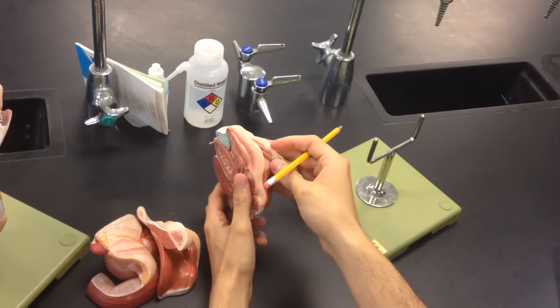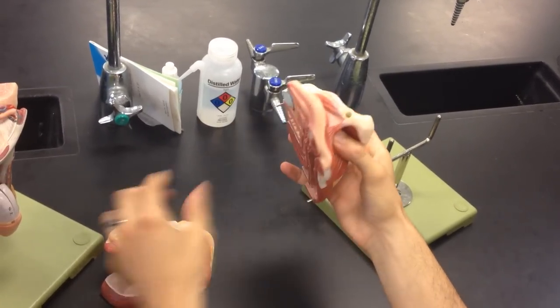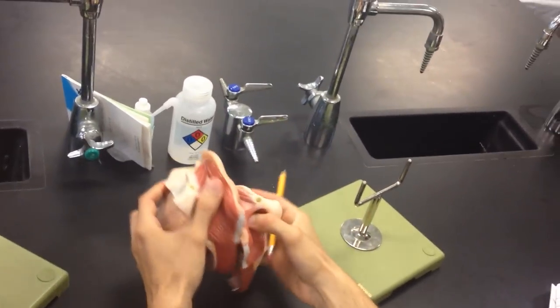All right. So these are actually found as if you use the word paraurethral, so closer to the urethral opening. Make sense? Okay. Let's see. Did I miss anything? No. That's everything on the female model. Okay. So now, let's see.